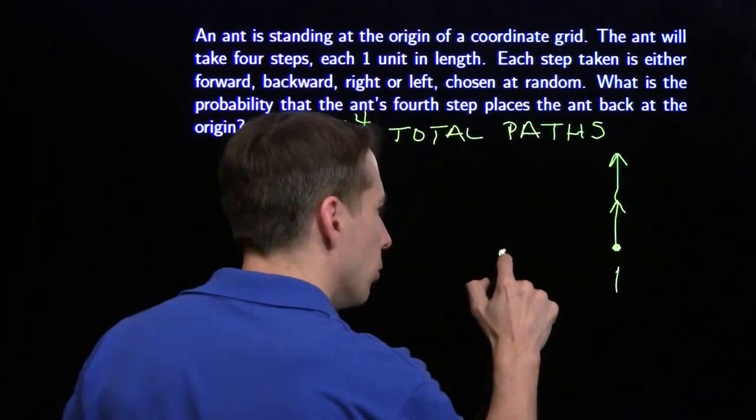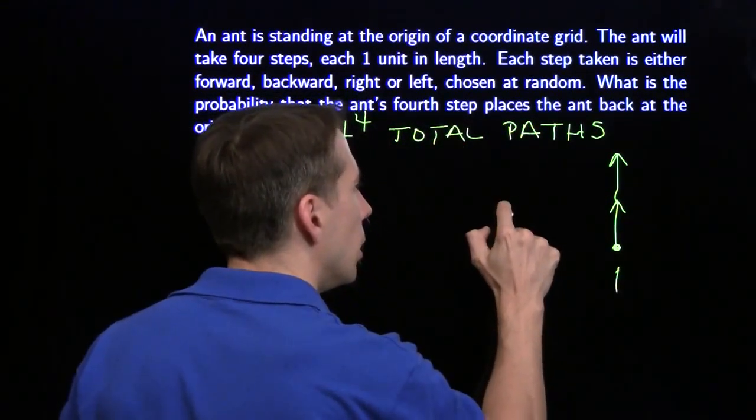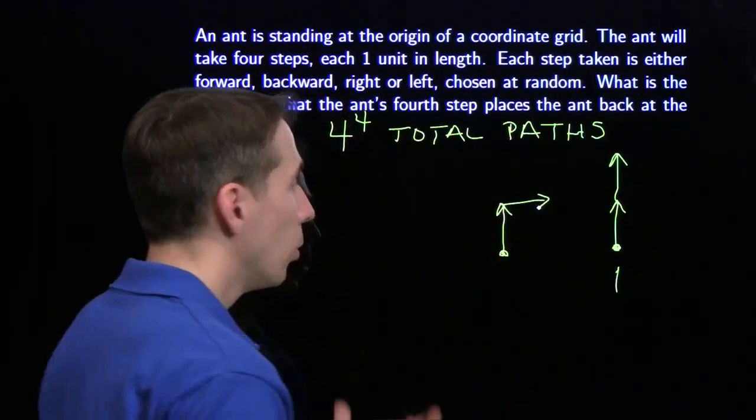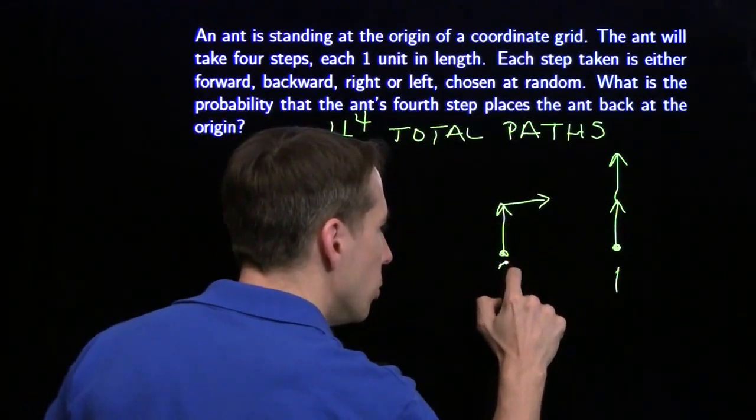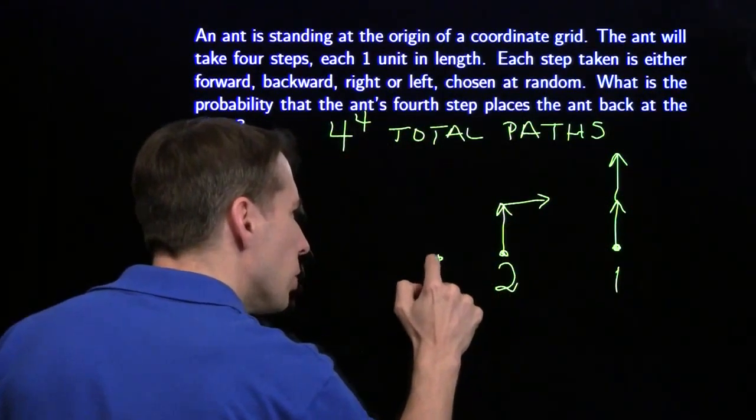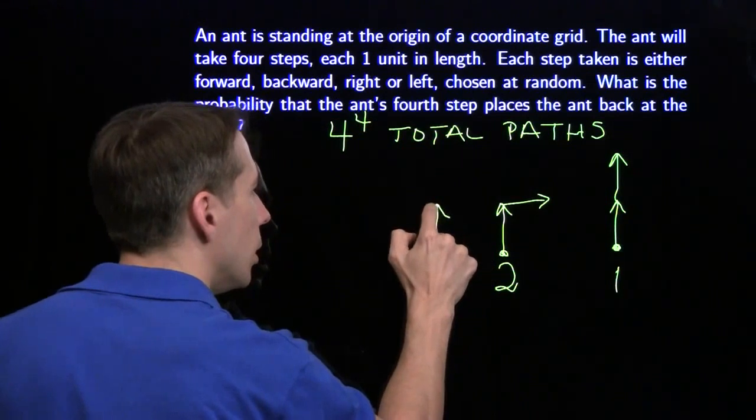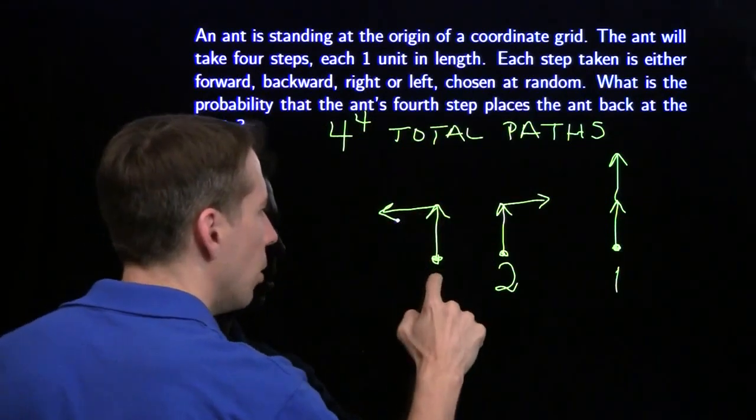Alright, so what if the ant goes forward and then goes to the right? Well, now there's two ways to get back home. Down, back, back, down. There's two ways to get home. And that's the same situation if the ant goes up and then goes left. Two ways to get back home.